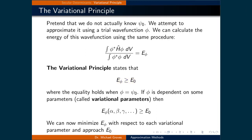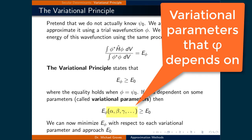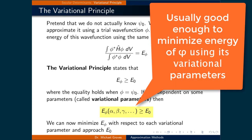If phi is dependent on some fitting parameters called variational parameters — denoted here as alpha, beta, gamma, and so on — then E_phi will be a function of those variational parameters. Starting with a reasonable trial wave function phi, we can minimize E_phi with respect to each variational parameter and approximate the ground state energy E0.